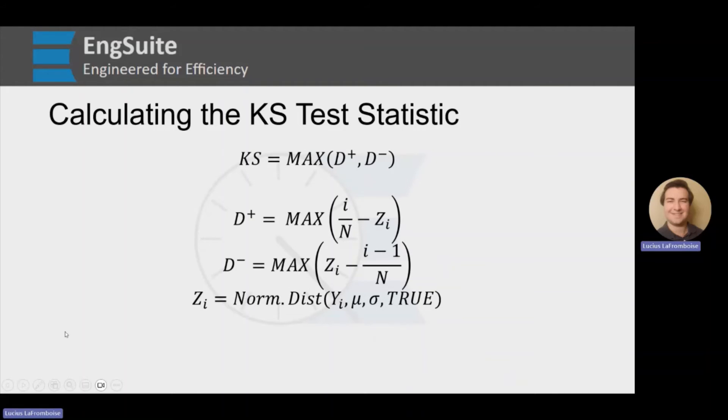So now we can talk about ZI. That's the norm.dist if you're using Excel or ENG sheets of YI with mean of mu and standard deviation sigma and true, because we want to make sure this is the cumulative distribution function.